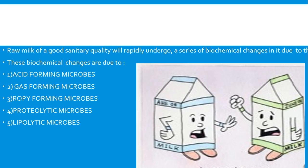When milk is kept under conditions that permit microbial growth, the raw milk of good sanitary quality rapidly undergoes a series of biochemical changes, and those biochemical changes are due to a group of microorganisms. What are those groups? They include acid-forming microbes, gas-forming microbes, ropy-forming microbes, proteolytic microbes, and lipolytic microbes. We will discuss each of these types in detail.